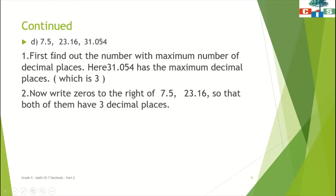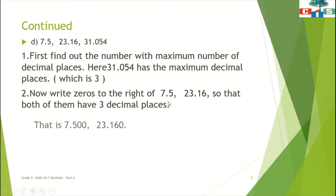We have to convert these unlike decimals to like decimals by putting zeros to the right of the last digit of the fractional part. We have to put 0 after 5 in 7.5, and also 0 after 16 in 23.16, so that both of them should have 3 decimal places. Here we have 7.5 — we have to put 2 zeros to make it into like decimals. So I have written 7.500.